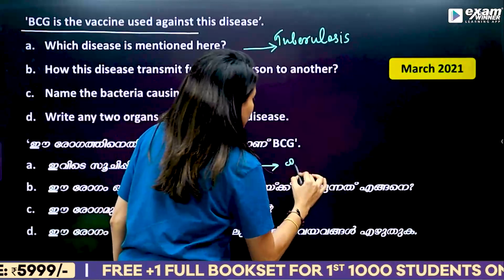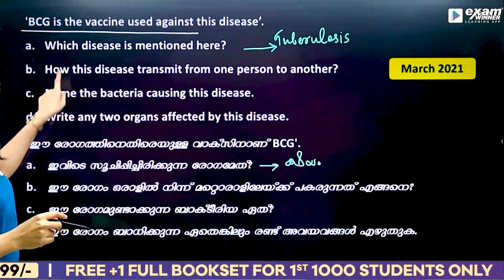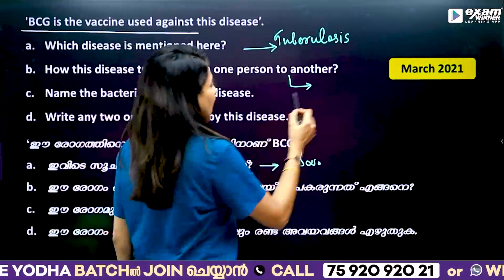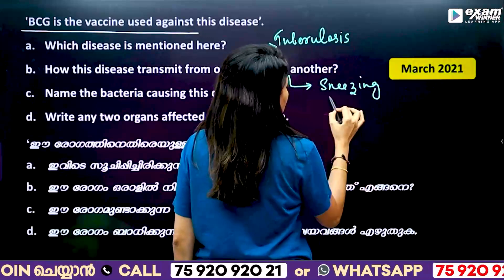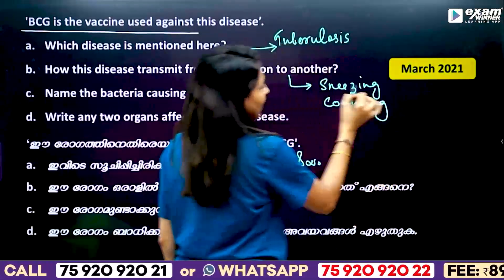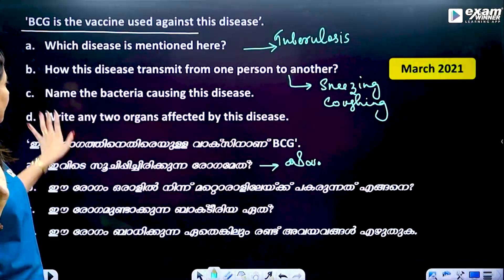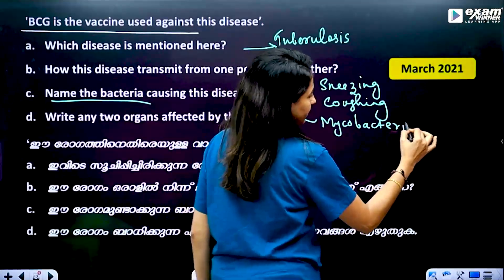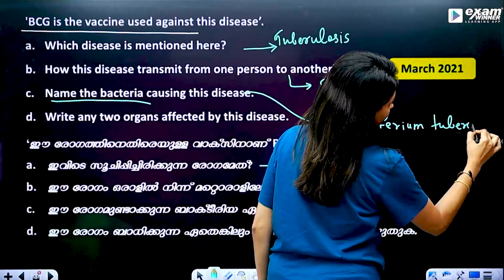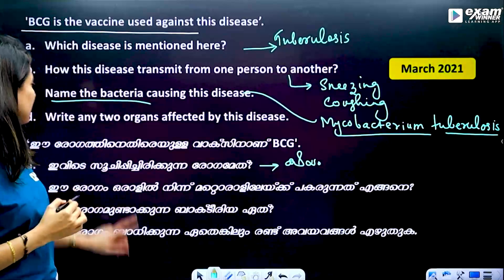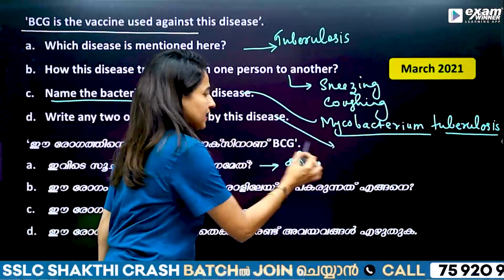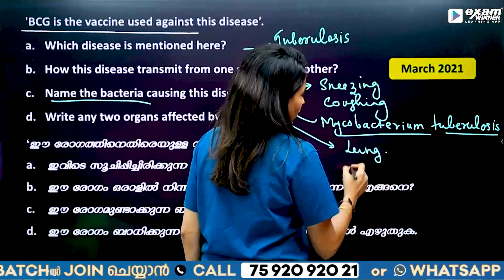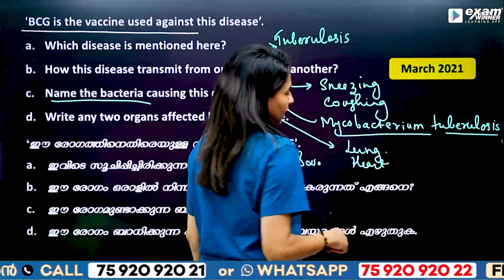Tuberculosis is a disease. How does this disease transmit from one person to another? It spreads through sneezing and coughing. Name the bacteria — this bacteria is Mycobacterium tuberculosis.